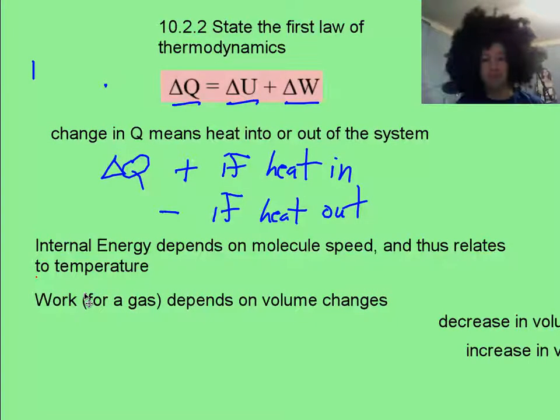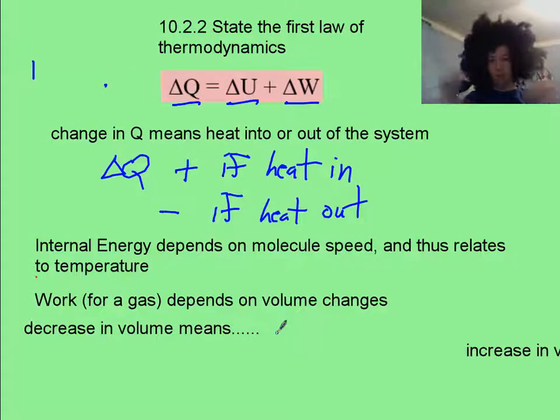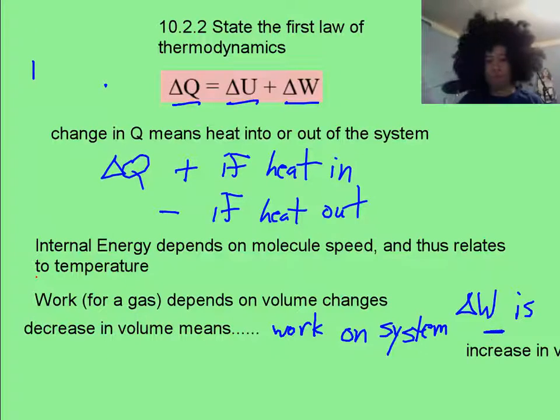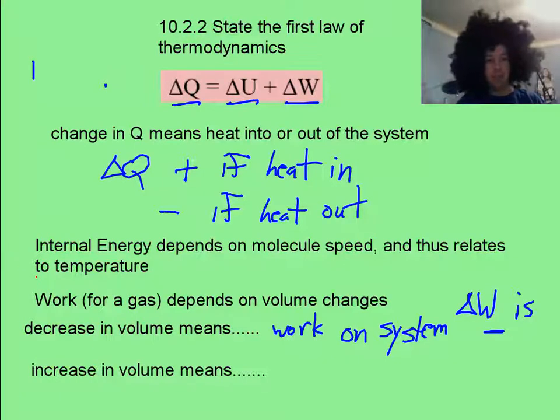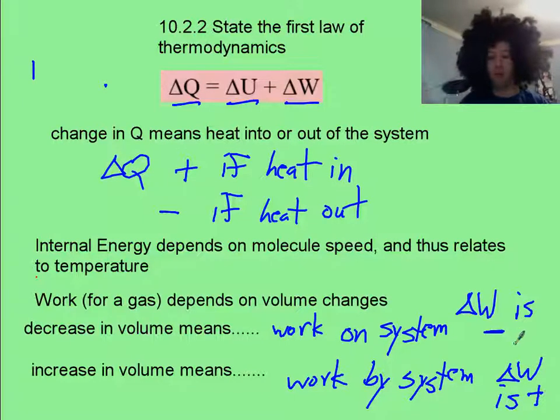Now, W is work. The gas has to be changing volume if there's any work being done. If the volume is going down, that means you're compressing it. We call that, or I'm going to call that, work on the system. If, on the other hand, the gas is blowing up, that's an increase in volume, and I'm going to call that work done by the system. And that delta W is going to be considered positive in my world, which is now your world.